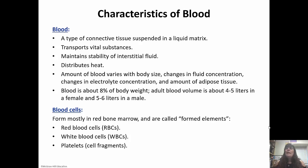Blood is about eight percent of our body weight. In males it's about five to six liters and in females about four to five liters. Blood cells are formed mostly in the red bone marrow and these are called the formed elements. There are red blood cells, white blood cells, and platelets.